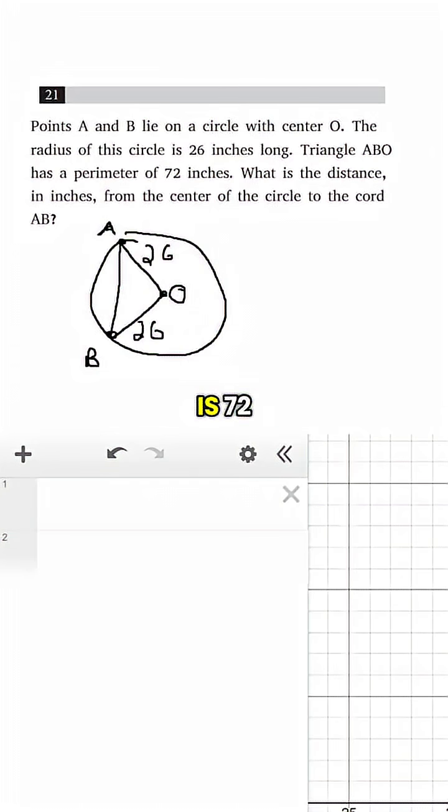And so if the perimeter is 72, well then this length of AB would just be 72 minus 26 minus 26. So it would be 20.